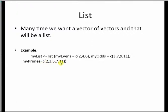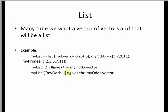If I want to print the second element of my_list, I type my_list[[2]] referring to it by index 2, and it gives me the odds vector. I can also print it by the index string I provided — for example, my_list[['my_odds']].